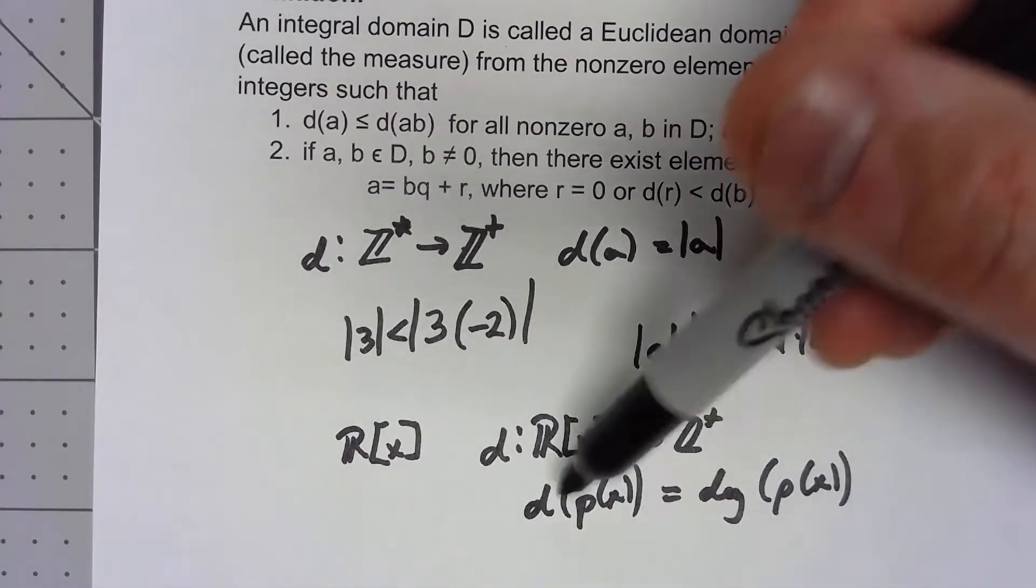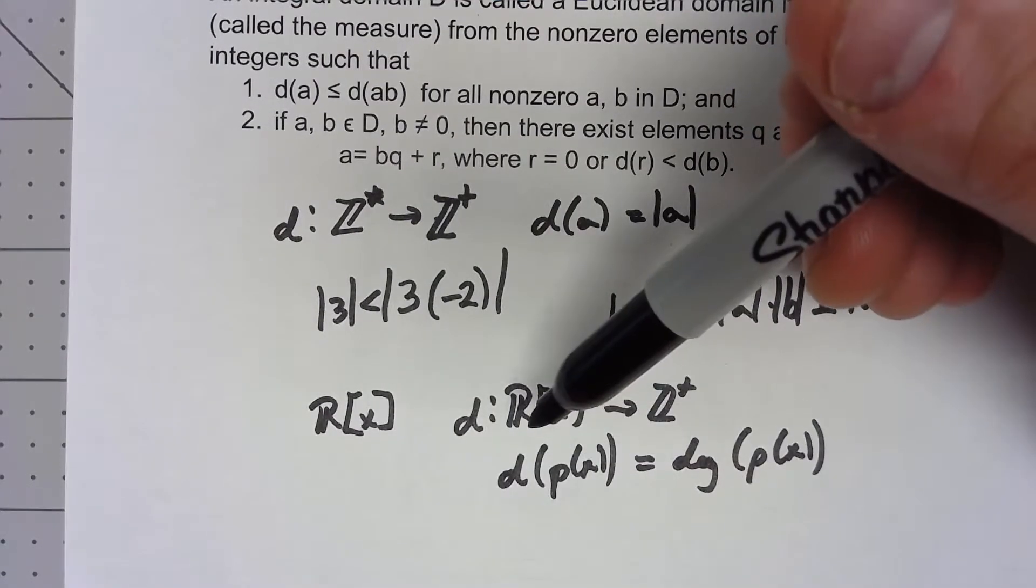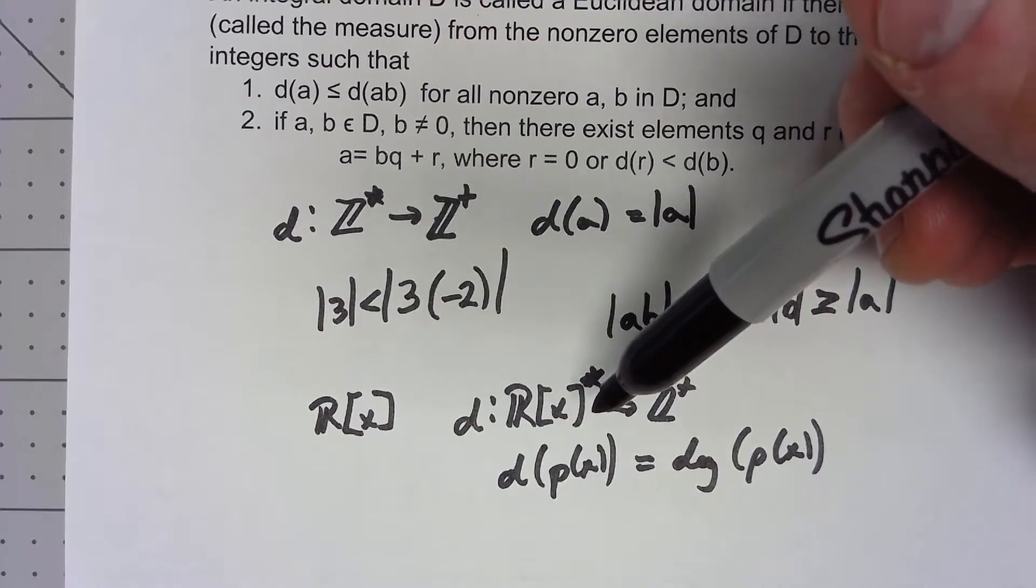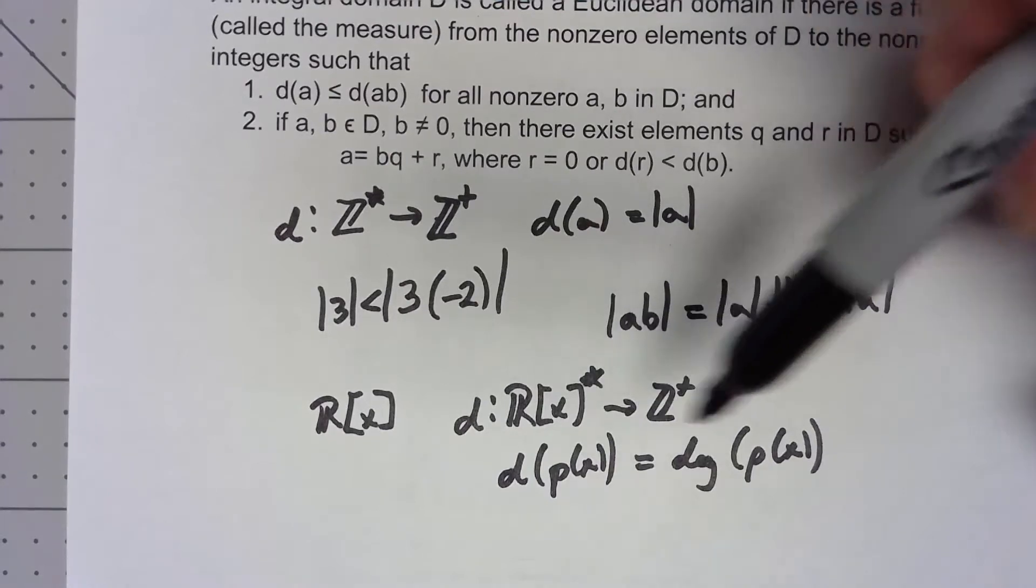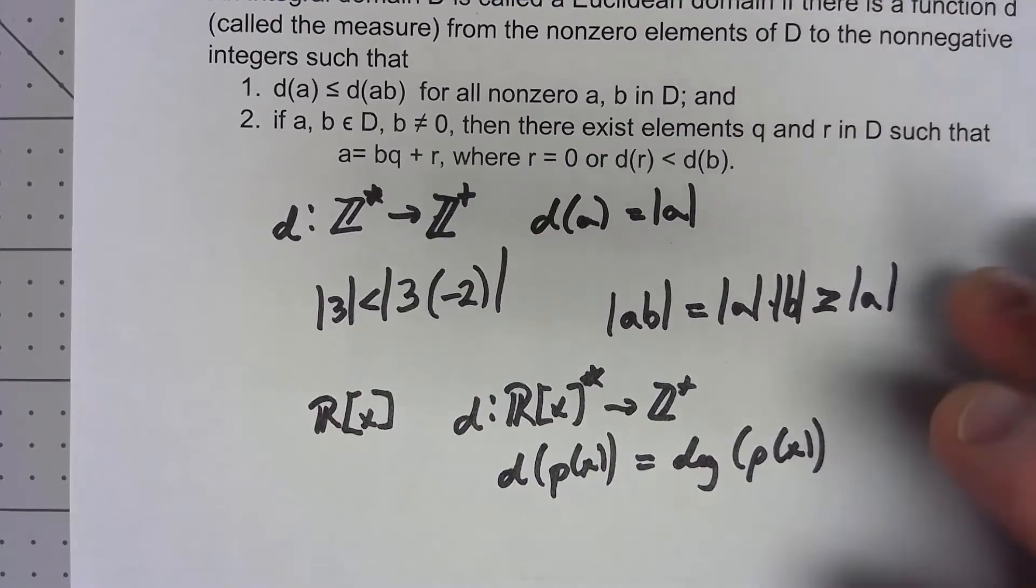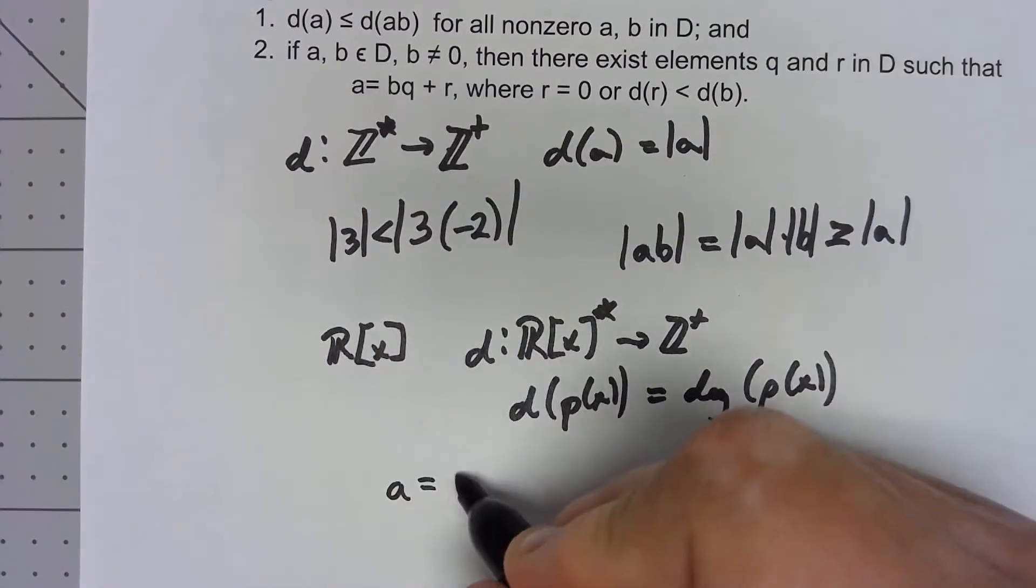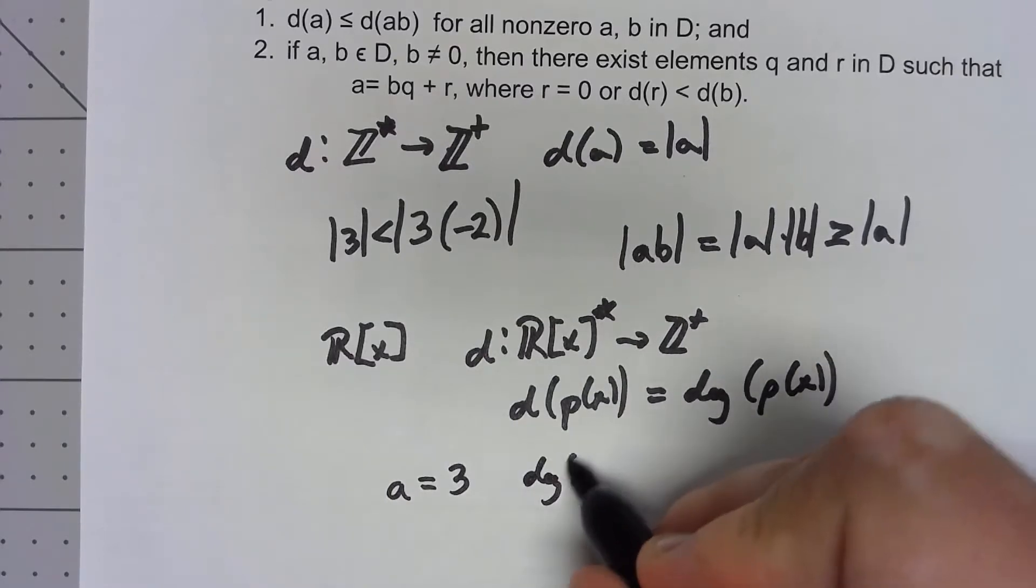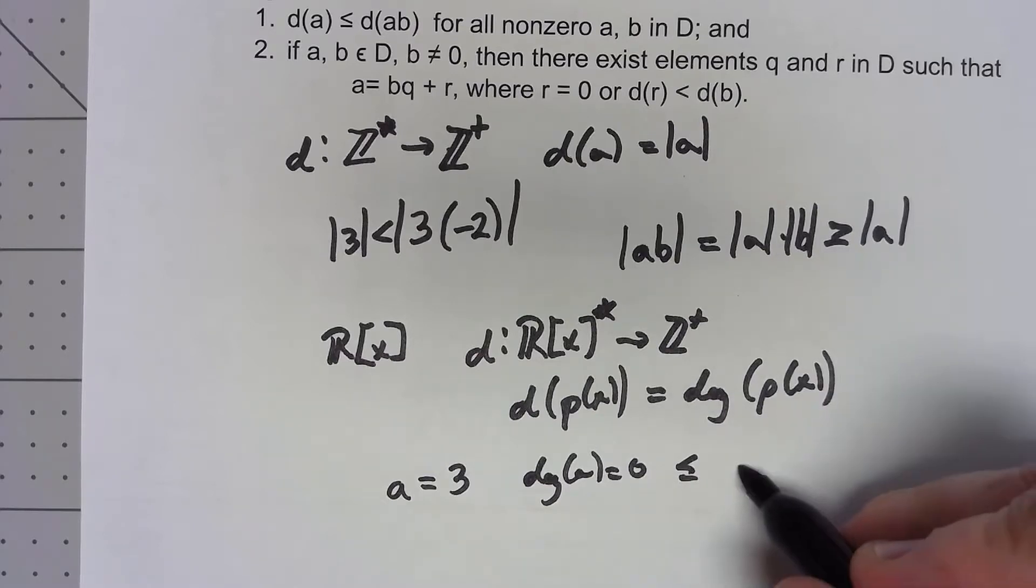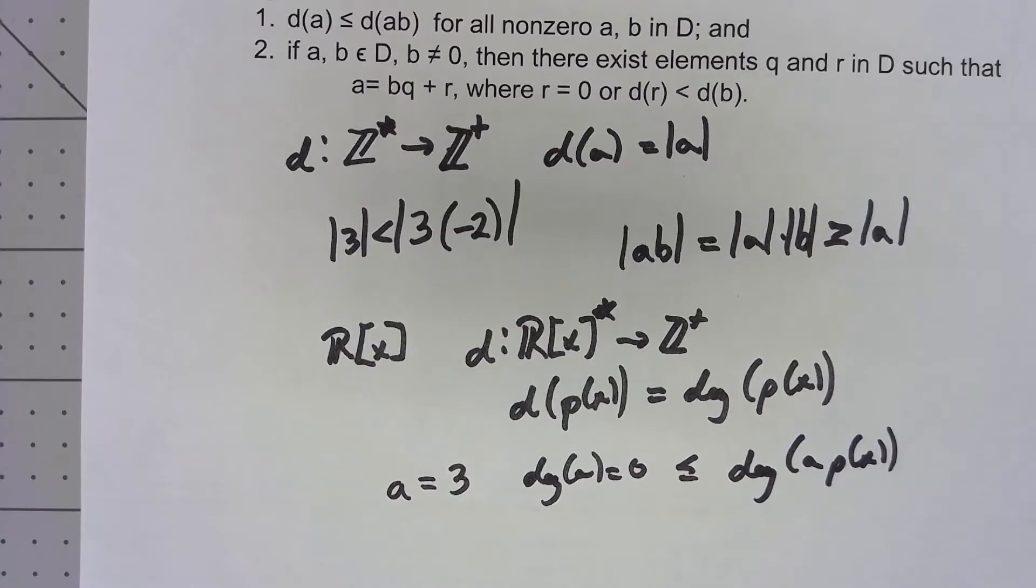Now we have to be a little bit careful here because we can have polynomials of zero degree. But in that case it's still the case. If I have a is just a number, the degree of a is zero and that's going to be less than or equal to the degree of a times any other polynomial, so that's fine that way.